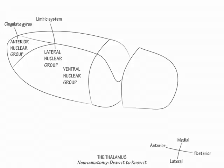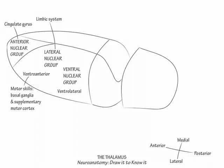Indicate that the ventral anterior nucleus is involved in motor skills and receives projections from the basal ganglia. The ventral lateral nucleus is involved in coordination and receives afferent information from the contralateral cerebellum. And finally, the ventral posterior nucleus projects to the primary somatosensory area.